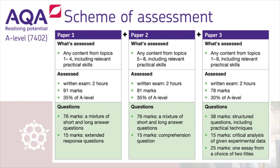The final A-Level Biology assessment consists of three papers, and the overall grade that you will be awarded is based on the total number of marks achieved. Paper 1 assesses your knowledge of the content from Year 12 topics and predominantly assesses your ability to demonstrate knowledge and understanding of scientific ideas, processes, techniques and procedures.